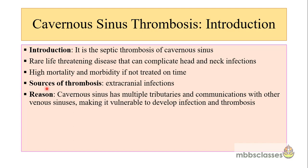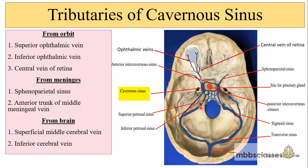The main source of thrombosis is extracranial infection. The reason is that the cavernous sinus has multiple anastomotic connections with different types of veins. It has multiple tributaries and communications with other dural venous sinuses, which makes it vulnerable to developing infection and thrombosis. To recapitulate the anatomy: the cavernous sinus gets tributaries from three main structures — the orbit, meninges, and the brain.